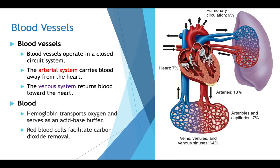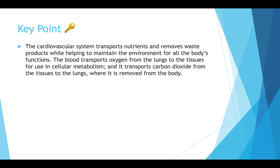Your blood vessels operate in a closed circuit. Your arterial system carries blood away from the heart — arterial and away both start with A, easy to remember. Your venous system returns blood towards the heart. Your hemoglobin transports oxygen and serves as an acid-base buffer; there are four hemoglobin on every red blood cell, giving each cell the potential to carry four oxygen molecules. Red blood cells also help remove carbon dioxide, which is one of the key functions of the cardiovascular system.